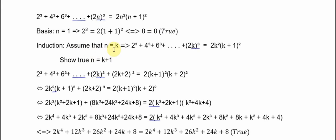We assume that n equals k, so we put k into the formula. Then we show for n equal to k plus 1: we put k plus 1 in and include the series behind it. We replace using 2k squared times k plus 1 squared in this expression.